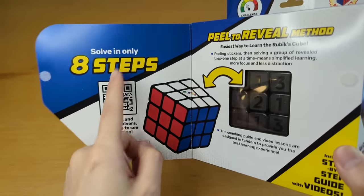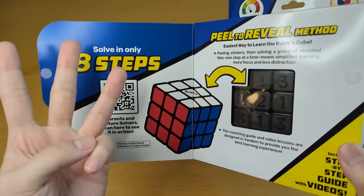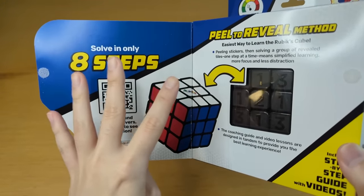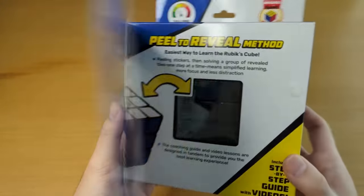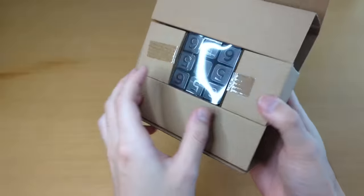Wait, wait, wait. Solve in eight steps. Cross, first layer, second layer, and there should be four steps for the last layer. I had eight steps. Peel the stickers is step one. Yeah, it's all just packaging.